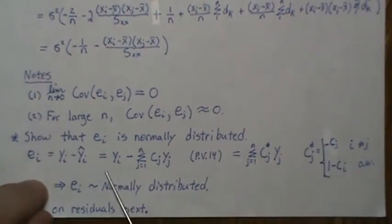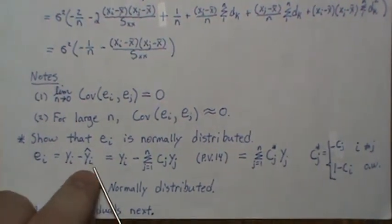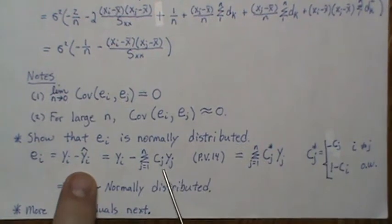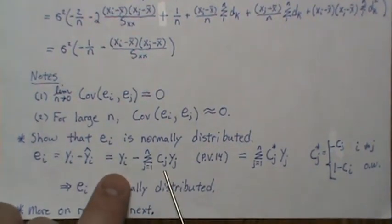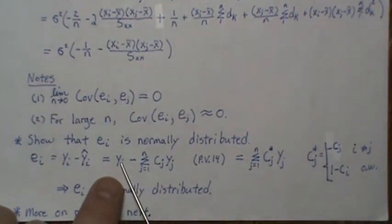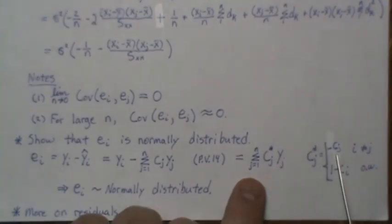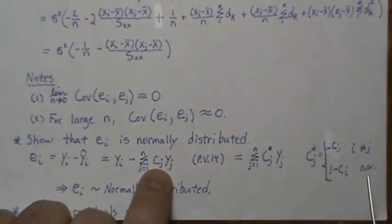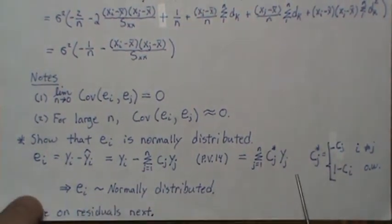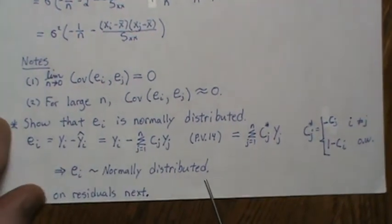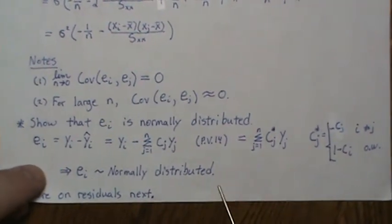We can show residuals are normally distributed: the residual is Yᵢ minus the fitted line. Since the fitted line is a linear combination of the Y's (shown in PV14), we can rewrite with coefficients cᵢⱼ*. When indices are unequal it's −cᵢ; when equal it's (1 − cᵢ). So it is a linear combination of the Y's, hence normally distributed with asymptotic mean zero and constant variance.